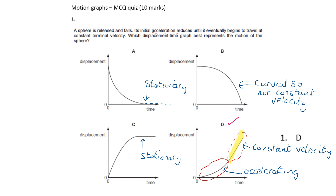It's worth checking the others. Whenever you get a flat straight line on a displacement-time graph, that means the object has stopped. So it can't be A because that flat line is there, and it can't be B because it flat-lines there — the object doesn't stop in the description. It can't be C because that's a constant curve, so the velocity never actually becomes constant.